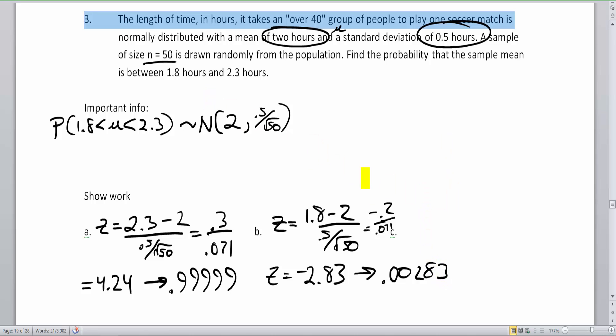Back to my sheet here. This is going to translate to a table value of 0.00233. So let's go to part C here. We're going to have 0.99999 minus 0.00233. And we subtract these two, and we get 0.99766, which is approximately 99.8% chance. Man, there's a very high likelihood that you're going to be between 1.8 hours and 2.3 hours.